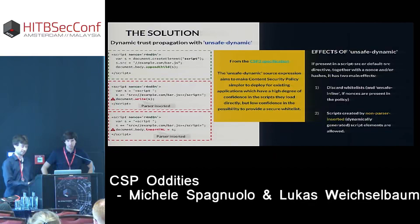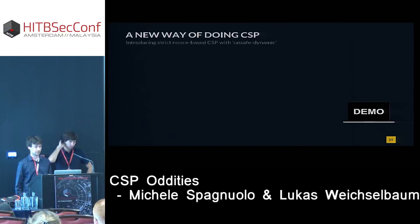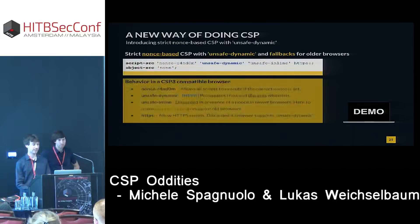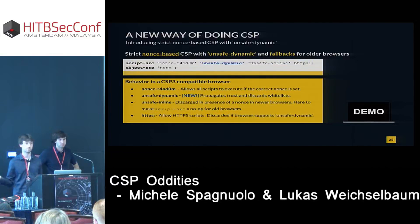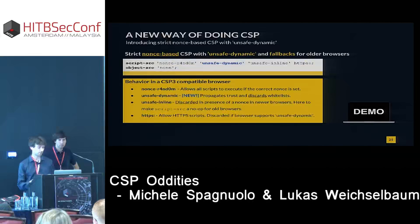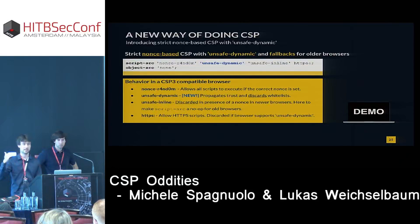So the policy would look like: you need a nonce, put unsafe-dynamic, and you can keep whatever else you want for backward compatibility. Nonce-random allows scripts with the correct nonce to execute. Unsafe-dynamic propagates trust to dynamically generated scripts and discards whitelists if present. Unsafe-inline is discarded because there is a nonce. Everything else — HTTPS, self, cdn.com — is discarded because it's a whitelist and unsafe-dynamic is present.